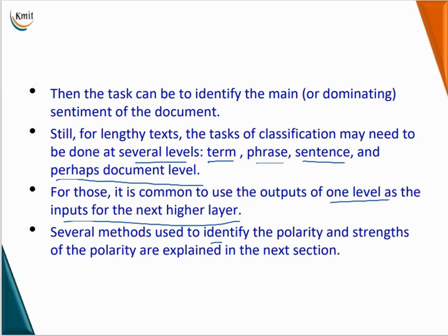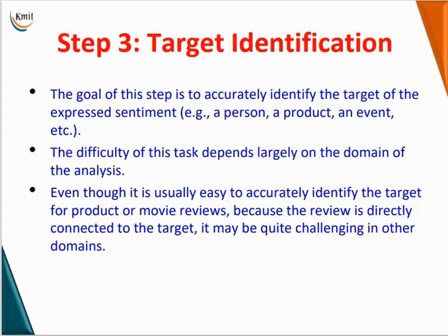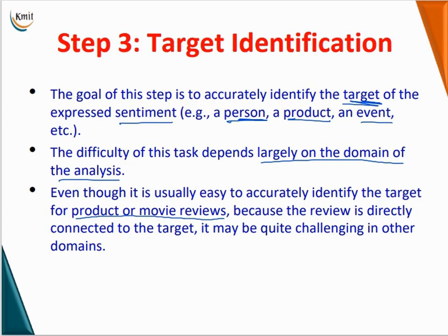Several methods used to identify the polarities and strengths of polarities are explained in the next section. Step 3 is target identification. The goal of this step is to accurately identify the target of the expressed sentiment — for example, the target may be a particular person, product, or event. The difficulty of this task depends largely on the domain of the analysis. It is usually easy to accurately identify the target for products or movie reviews because the review is directly connected to the target.